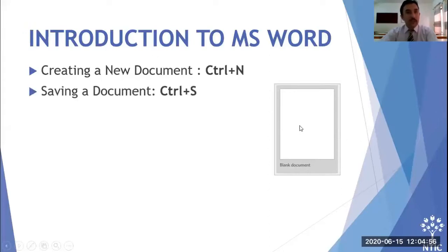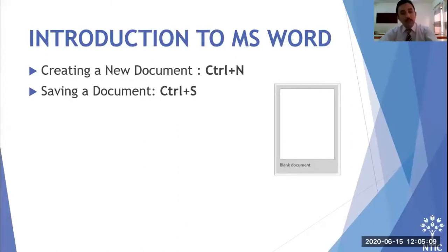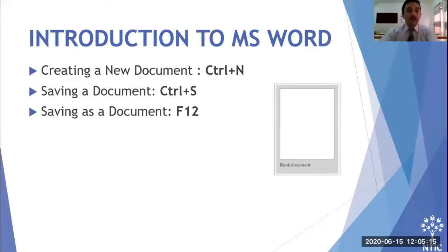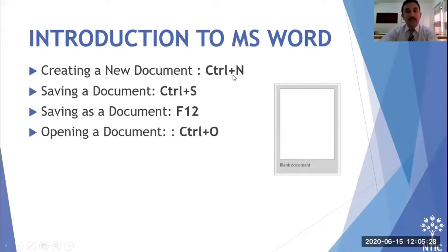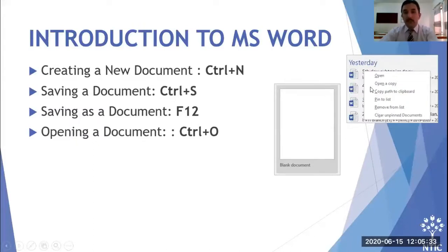To save a document, use Ctrl+S — hold down Control and press S. To save as a document with a different location, extension, or name, use F12. To open a document, use Ctrl+O. You can also see recently used documents from there.